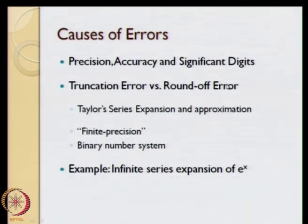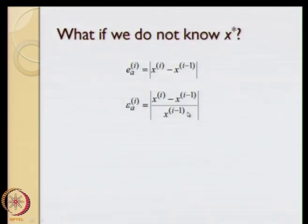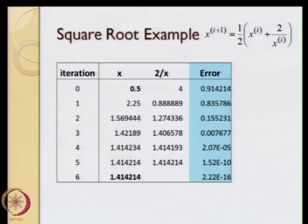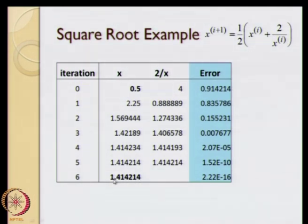Next, we are going to look at the causes of errors. Before we do that, we will discuss what we mean by precision, what we mean by accuracy, and what we mean by significant digits. In the previous example, we looked at essentially seven significant digits — we know for sure the solution is correct up to that number of digits and we do not know what happens beyond that point. We are interested in six digits after the decimal point, with one digit before it, giving us seven significant digits in total.